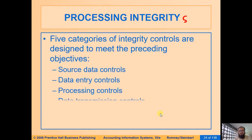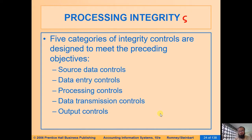If we divide it in more detail, there are five different types of controls which need to be implemented to ensure processing integrity and, towards the end, systems reliability. These are: source data controls, data entry controls, processing controls, transmission controls, and output controls — and we shall discuss them over the next few videos.